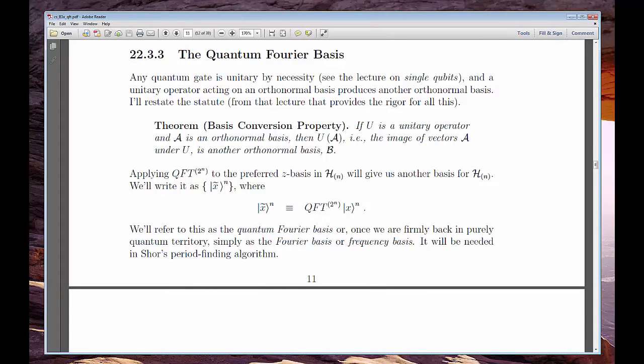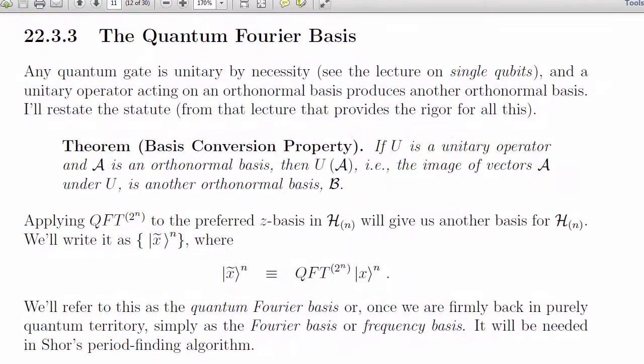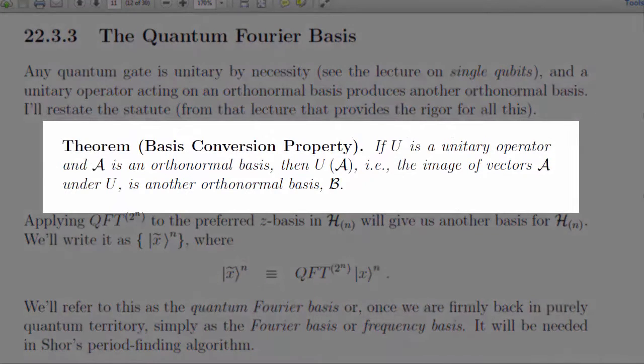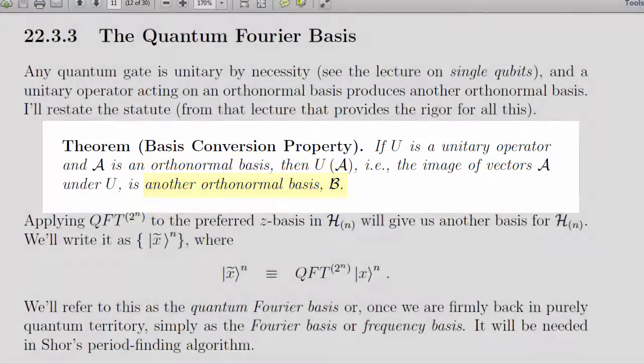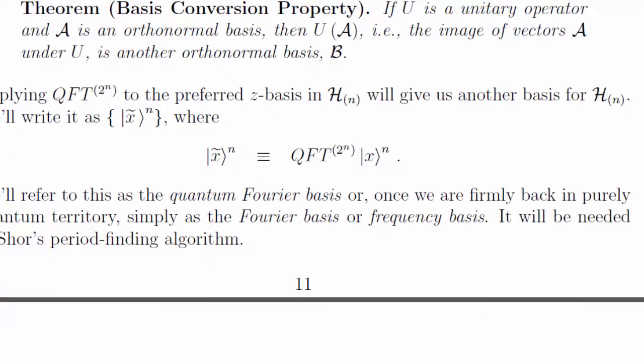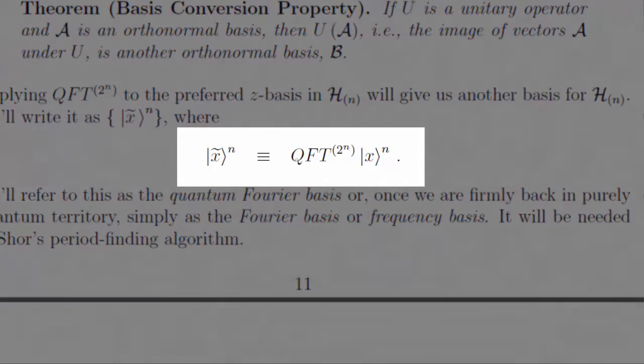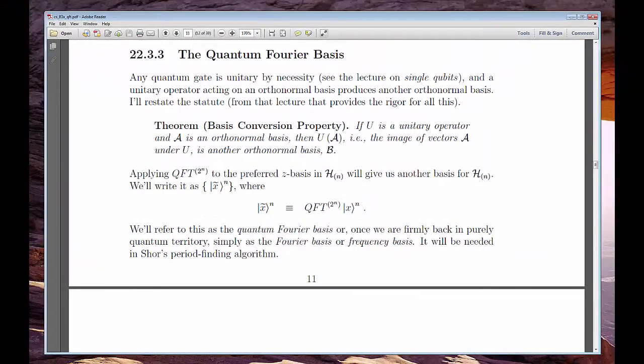After the definition, the other thing I mentioned was the basis transforming aspect of the QFT. Well, we already know that any unitary transformation, any quantum gate, can be viewed as a basis change tool. Unitary matrices take orthonormal bases to other orthonormal bases. The Fourier basis is, by definition, just the 2 to the n kets you get when you apply the QFT to the preferred basis. Now, the interpretation of that new basis as a way to measure some function in terms of its frequency falls into the optional category, but it's not overly difficult to see if you try.